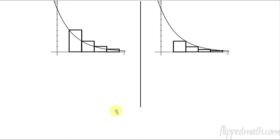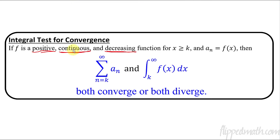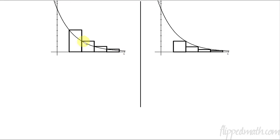That's why we're going to go through it. To set us up, I've already created a function — this is just an exponential decay function that's decreasing, but it's always positive, always continuous, and always decreasing. So it fits those three criteria: positive, continuous, decreasing. I'm going to be writing a little bit smaller than I usually do in my videos just to fit everything in.